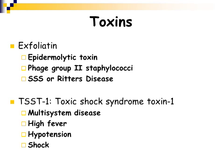Staph aureus also produces exfoliatin, which causes the loss of the epidermis skin layer. It causes staphylococcal scalded skin syndrome, a disease that causes the skin to slough off an individual, as well as Ritter's disease. It also produces Toxic Shock Syndrome Toxin 1, which causes toxic shock syndrome — a multi-system disease that causes high fever, low blood pressure, and can lead to shock and death.